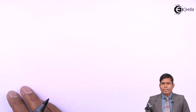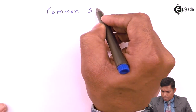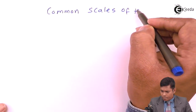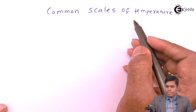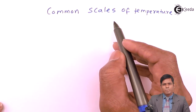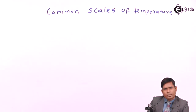Students will discuss the different types of scales of temperature — what are the different scales we use to measure temperature. There are basically three scales we use: degree centigrade, which is very common, Fahrenheit, and the absolute scale.